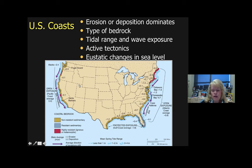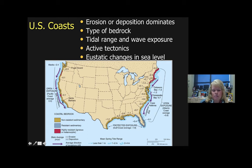Along the US coast, the bedrock varies throughout the country, largely dictated by prior transgressions and regressions. Along the east coast, gulf coast, and most of the west coast, you'll see non-resistant sedimentary rock that breaks down easily. Red patches indicate highly resistant igneous or metamorphic rock, while the blue section represents hard sedimentary rock like dolomite that doesn't weather very fast.